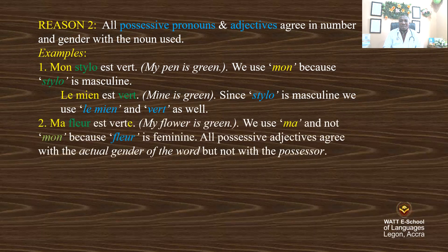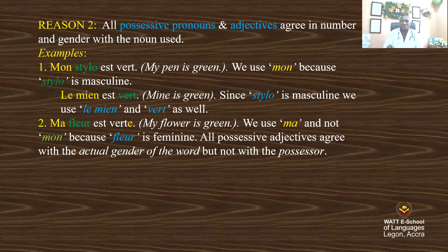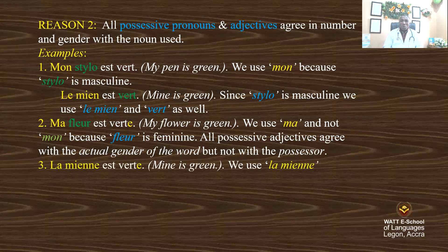'Ma fleur est verte' — my flower is green. There's a change here. We use 'ma' and not 'mon' because fleur is feminine. All possessive adjectives agree with the actual gender of the word, but not with the possessor. I am the main person talking, but the agreement is done with the noun I'm using, not my gender. So the adjective agrees with the noun referred to, not the speaker's gender. 'La mienne est verte' — we use 'la mienne' because it agrees with flower, which is feminine.